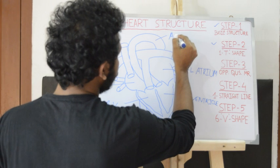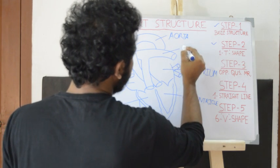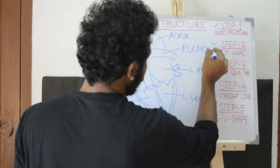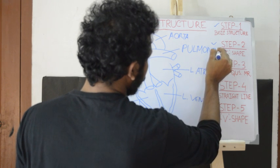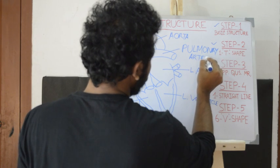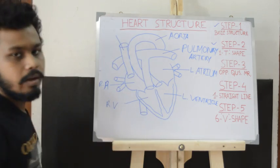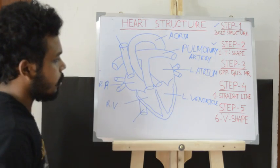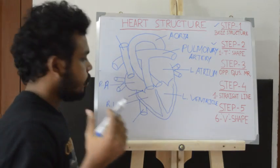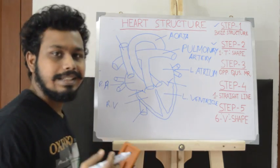This is the aorta. This is the pulmonary artery. This is the superior vena cava and this is the inferior vena cava. This valve is known as the tricuspid valve, and this other valve is known as the mitral valve.